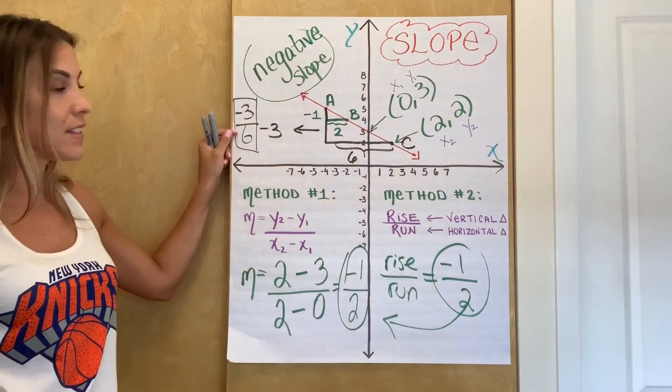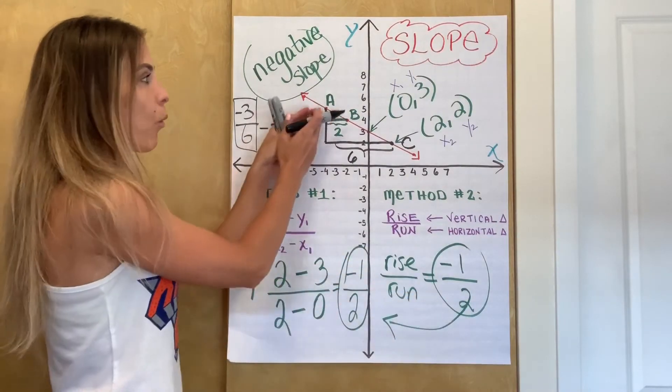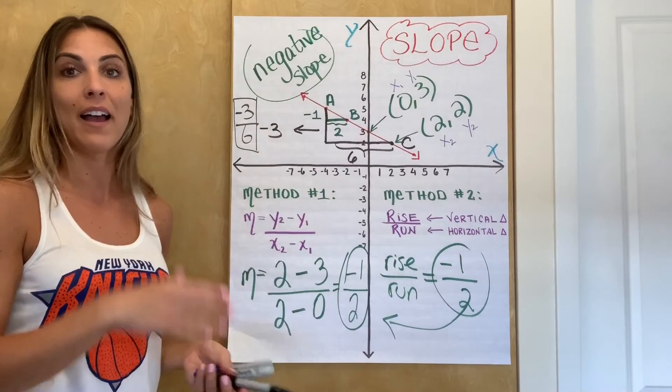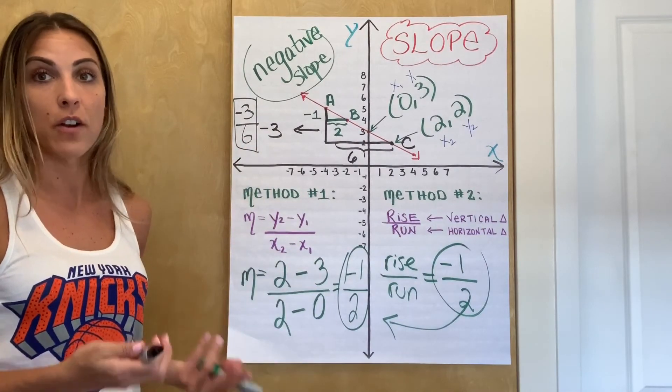Negative three over six, if I simplify it, is the same as negative one half. So again, no matter which two points you pick, because by definition a line has a constant rate of change, a constant slope, you're going to get the same answer as long as you do it correctly. All right.